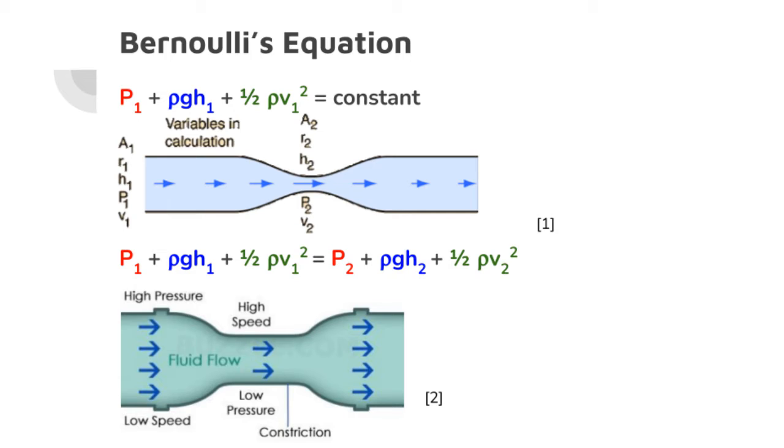One of the more common phenomena that can be explained by this equation is the inverse relationship between the pressure of a flowing fluid and its velocity. What does this mean? It means that when the velocity decreases, the pressure increases, and when the velocity increases, pressure decreases.